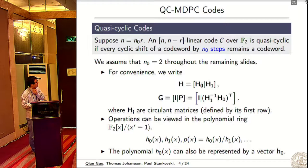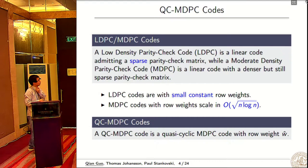Here, Hi are circulant matrices. We can also get a systematic generator matrix which is a dense matrix. Operations can be viewed in a polynomial ring, and we can write polynomials in vector form. What is MDPC? It's an extension of LDPC. Low-density parity-check code is a linear code with a sparse parity-check matrix.